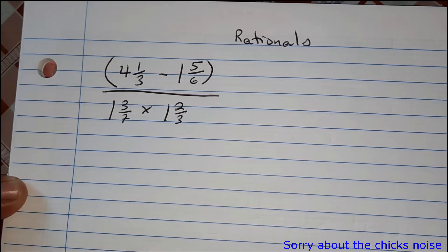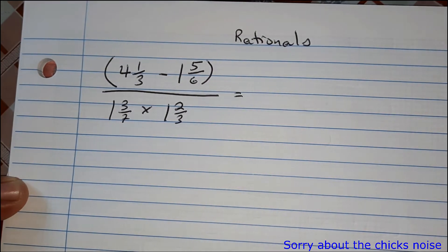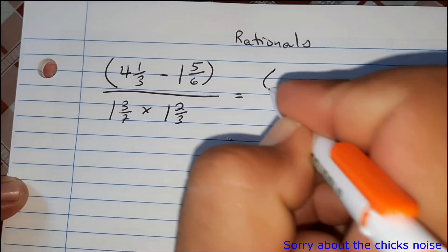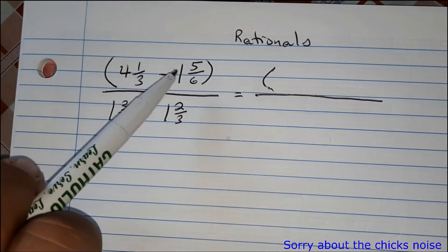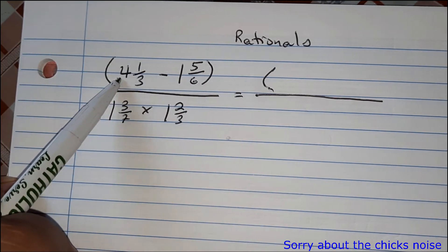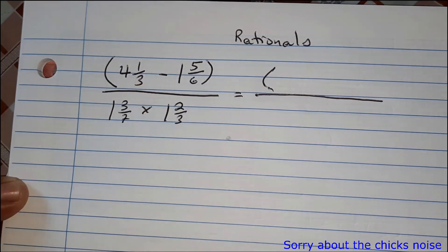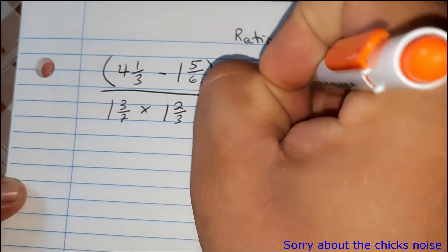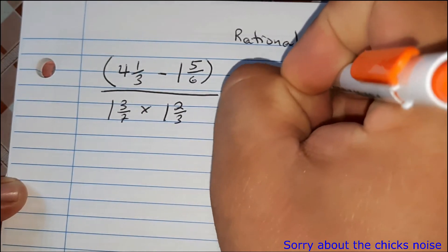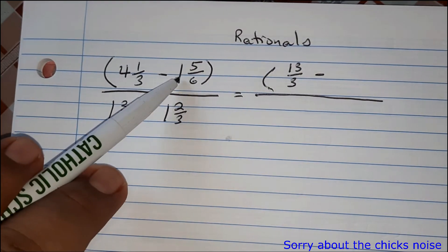So how do we work this out? The first thing we have to do is change everything to improper fractions. We know that in an improper fraction the numerator is going to be bigger than the denominator. Changing the first part: three times four is twelve, plus one is thirteen — so that's thirteen over three.